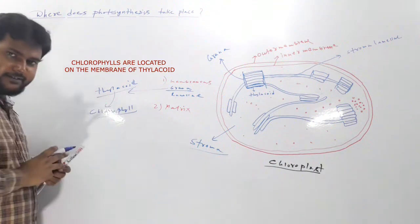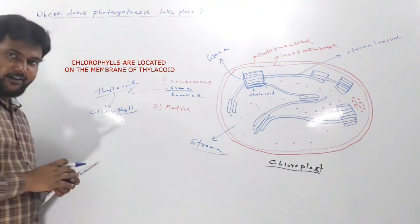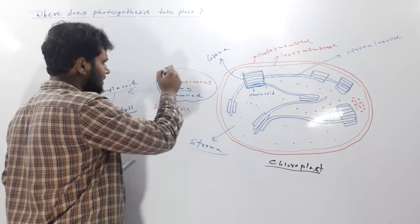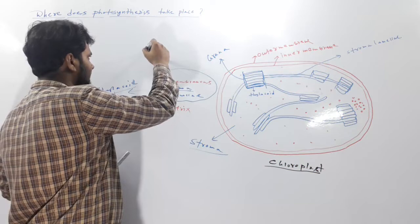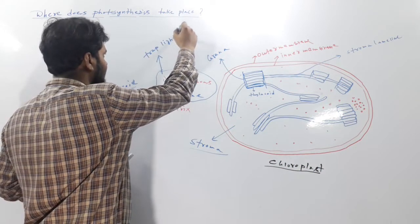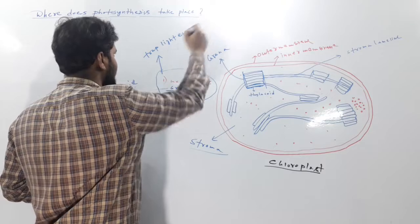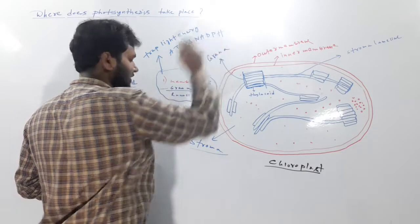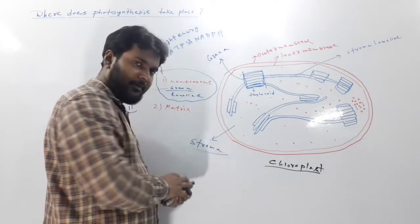So this membranous part traps light energy. It forms ATP and NADPH. And this stroma part...